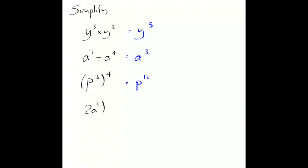2a squared cubed, which means 2a squared times 2a squared times 2a squared, which will give us the 8 from the 2 cubed and the a to the 6.